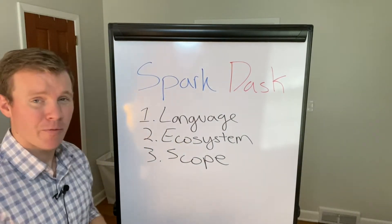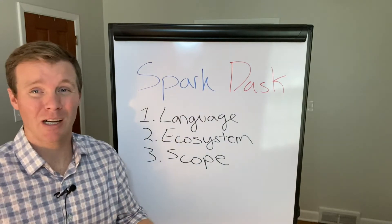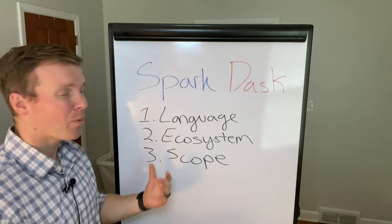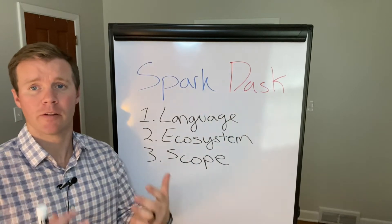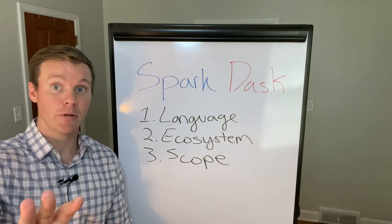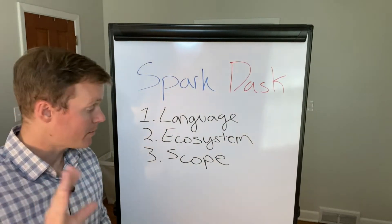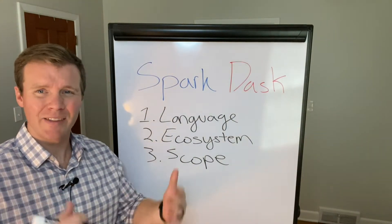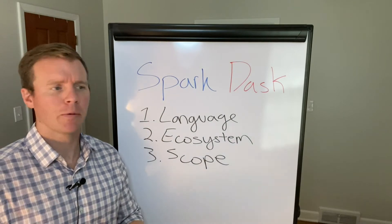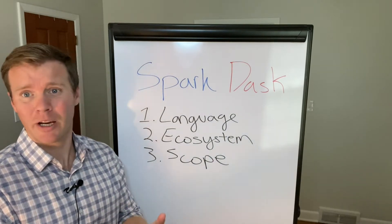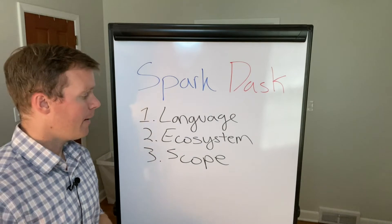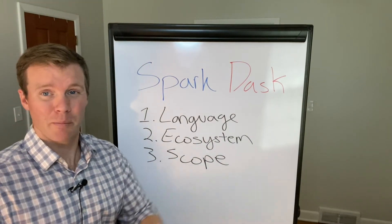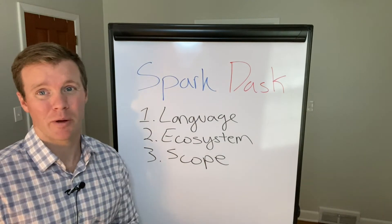And finally, number three: scope — what you're actually trying to accomplish. If you're doing SQL workloads, you're probably going to want to go with Spark because Spark has a great SQL interface. Dask has one too, but Spark is pretty well known for this. There are lots of BI and report developers who don't know Python, don't know Scala, and don't care to — they just use SQL via Spark. Similarly, if you're doing more Pythonic things and interacting with other libraries in the PyData stack, then maybe Dask would be the way to go.